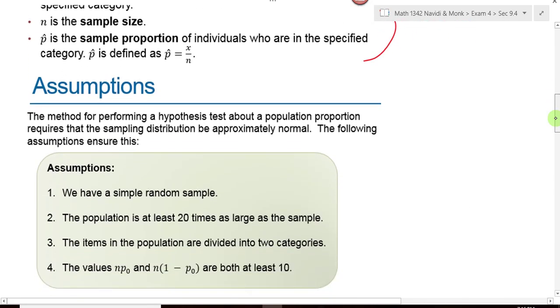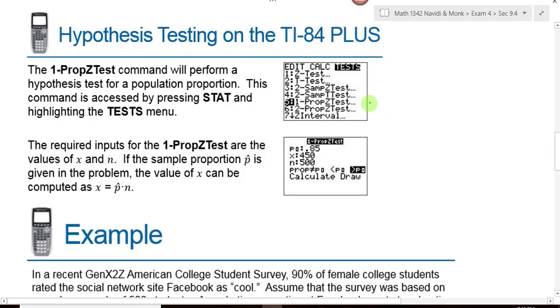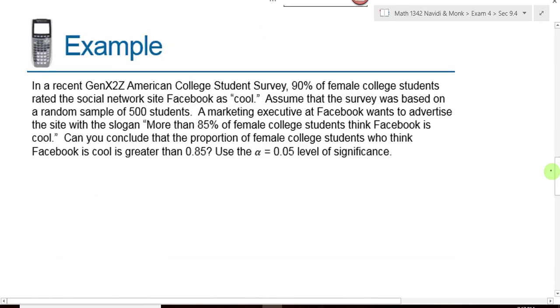The assumptions that we make here are exactly the same as they were for the confidence intervals. You have to have a simple random sample. The population is at least 20 times as large as the sample. The items in the population are divided into two categories, and N times P and N times Q both have to be bigger than or equal to 10. On your graphing calculator, what we will be looking for is the one prop Z test when you're testing a claim about a proportion.